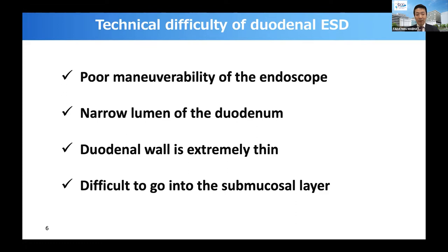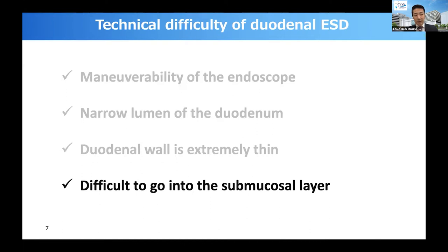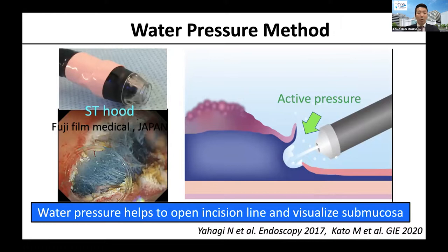Because of the narrow space in the submucosal layer, it is difficult to insert the endoscope into the submucosal layer. The key to the success or failure of ESD is slipping into the submucosal layer. To overcome this difficulty, Dr. Ihagi developed the water pressure method to facilitate the endoscope going into the submucosal layer using the water jet function and water immersion. The method also utilizes the tapered ESD hood.